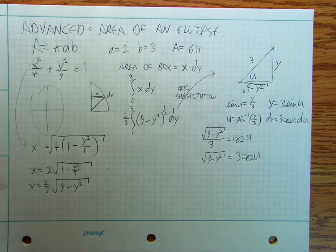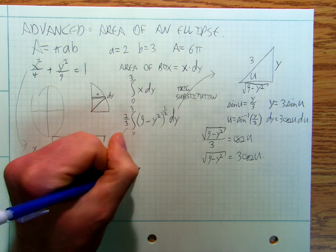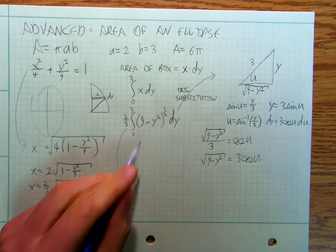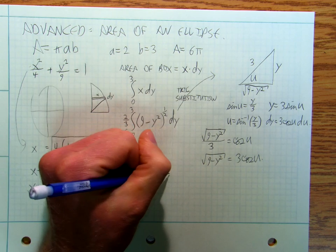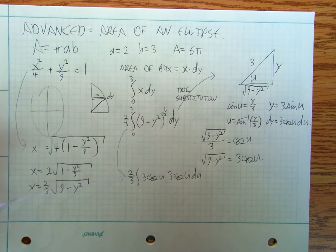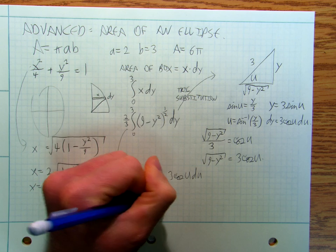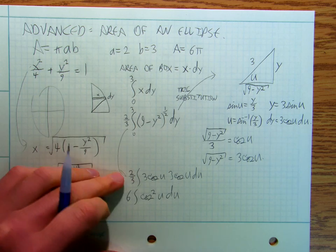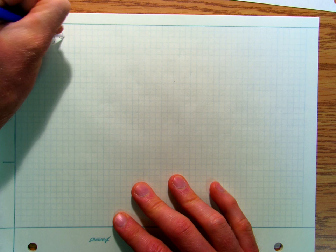Now, √(9 − y²) over 3 equals cos(u), so √(9 − y²) equals 3cos(u). This doesn't look all that bad. So I want to take two-thirds of the integral — forgetting about the limits for a second — that's going to be 3cos(u), and dy is going to be 3cos(u) du. Pulling that out, I get 6 times the integral of cos²(u) du.